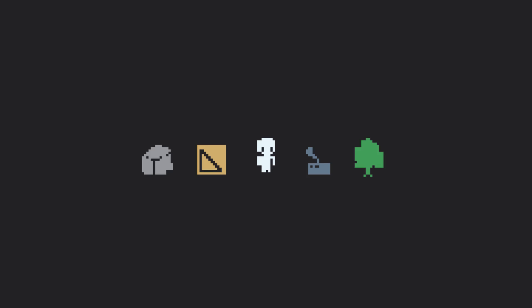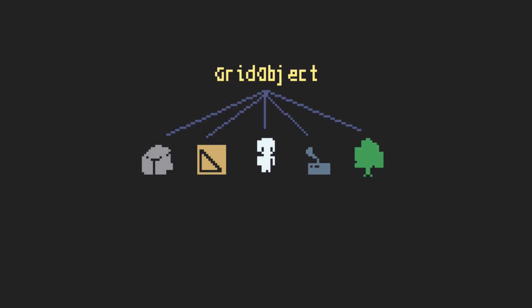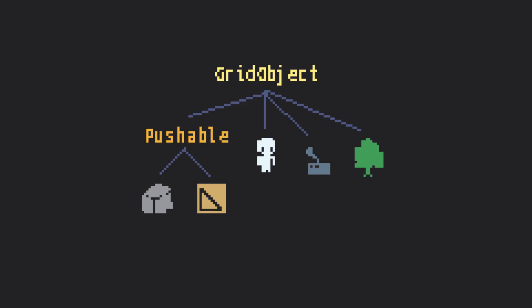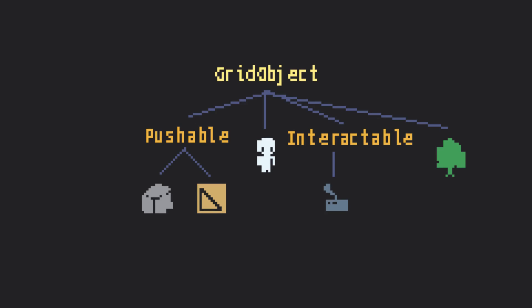Okay, since everything is snapped to the grid, let's have them inherit grid object. Rocks and crates can be pushed around, so inherit pushable grid object. The player is obviously its own thing. Switches can be interacted with, so inherit interactable grid object.